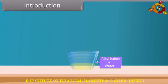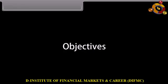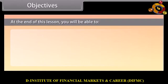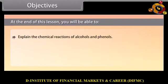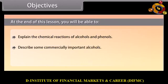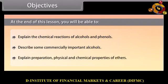In this lesson, we will learn more about chemical reactions of alcohols, phenols and ethers. At the end of this lesson, you will be able to: explain the chemical reactions of alcohols and phenols; describe some commercially important alcohols; explain preparation, physical and chemical properties of ethers.